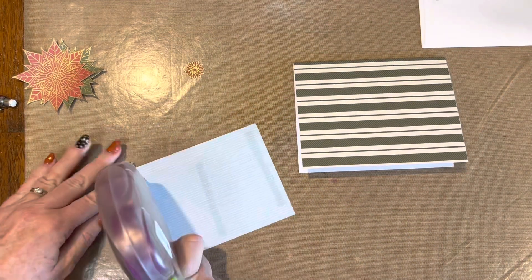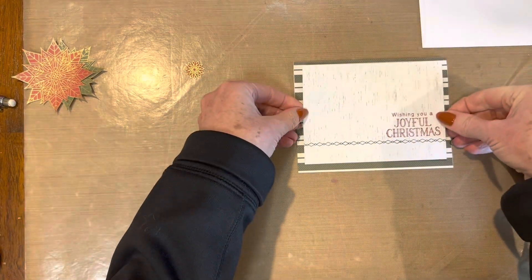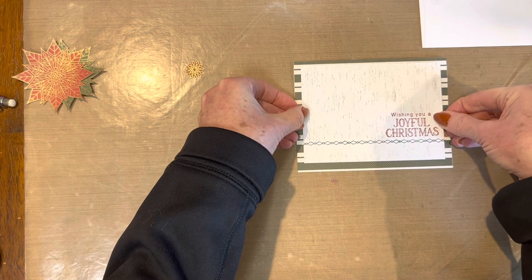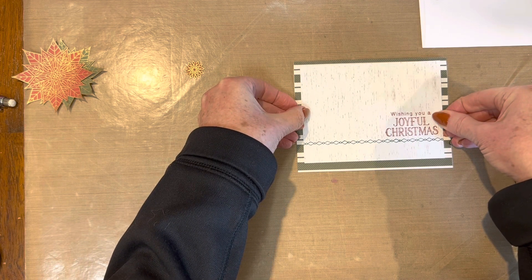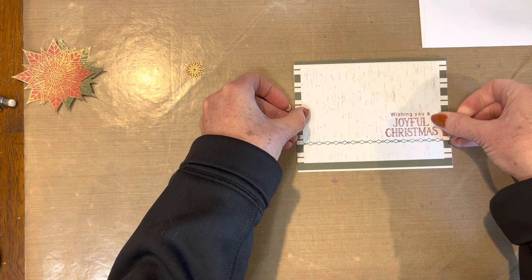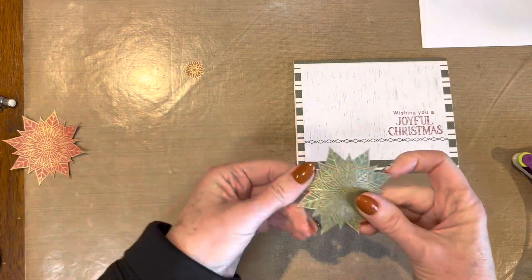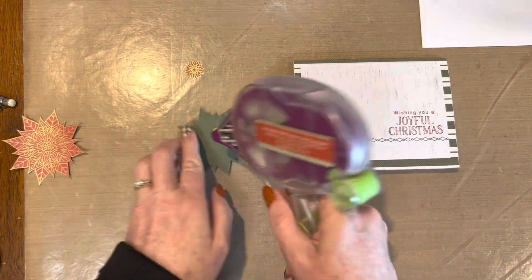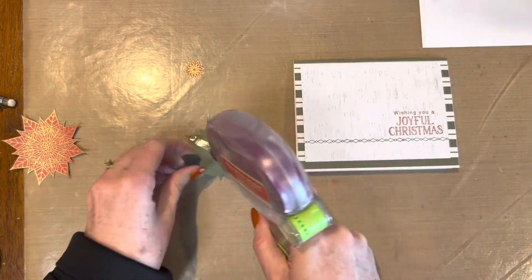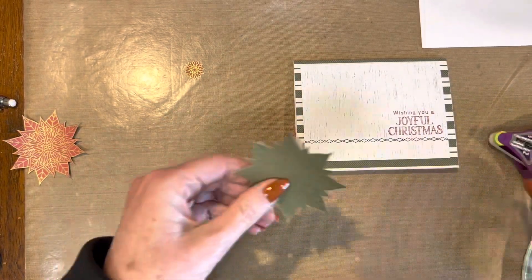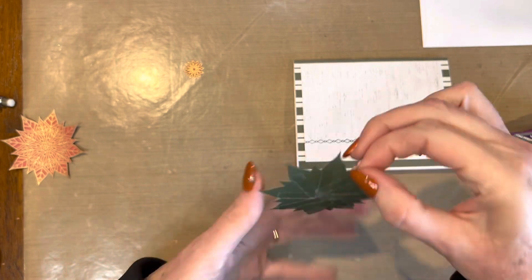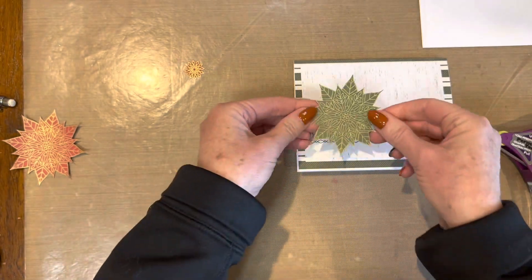So this one is a very fast card. I'm telling you, the embossing is what took the longest. I'm going to put this paper on the front of my card and center it up. And then I'm going to first put down that green snowflake or what I'm using as leaves.